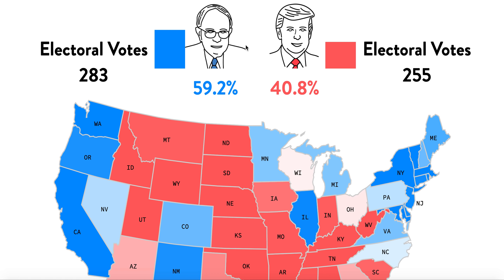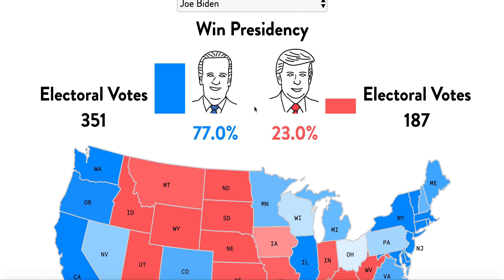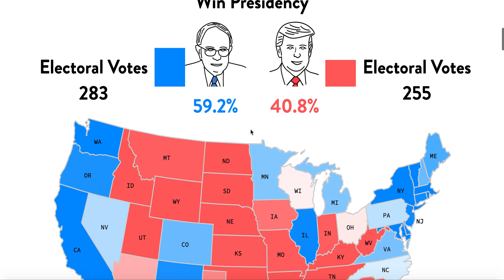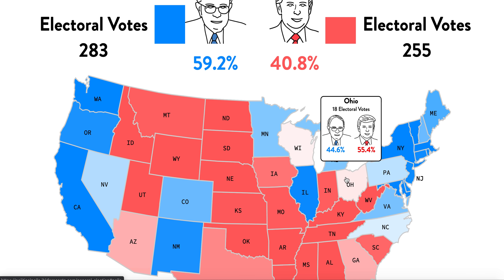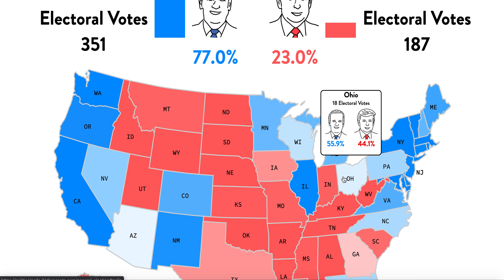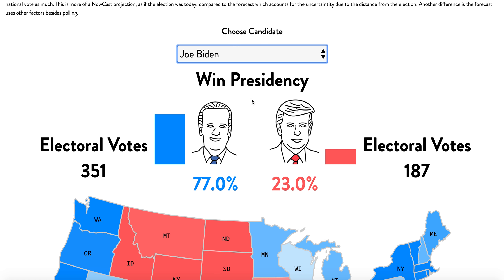The next issue is electability. This is the same issue used by the Clinton camp in 2016, except back then the numbers didn't back it up — Bernie Sanders consistently outperformed Hillary Clinton in 2016 general election polls. That's not the case this time. On screen is the JHK forecast: based on polling data, Joe Biden has a 77% chance of winning the presidency, while Bernie Sanders has only a 59.2% chance, losing notable states like Wisconsin, Ohio, Georgia, and Florida compared to Biden, who would carry Wisconsin, Ohio, Florida, and Arizona.